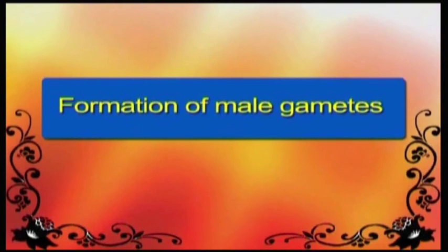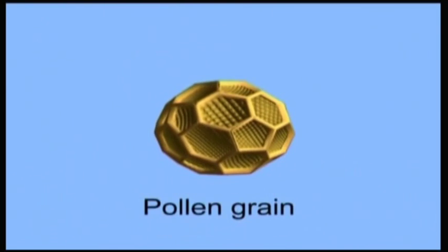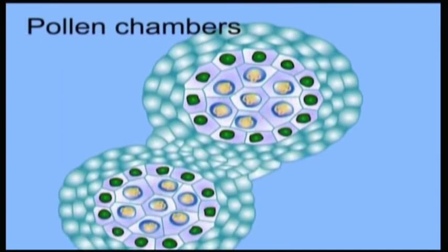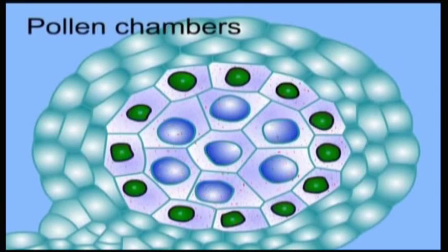Formation of male gametes. Pollen grains develop in anther. Anther consists of two lobes. Each lobe has two pollen chambers. Anther consists of spore forming tissue.